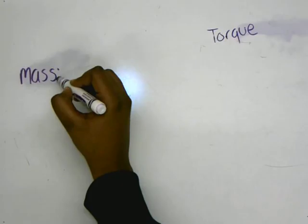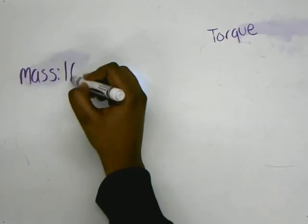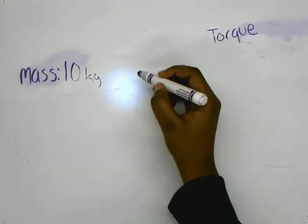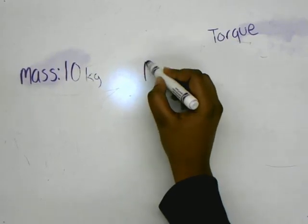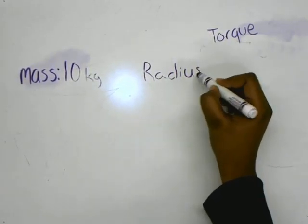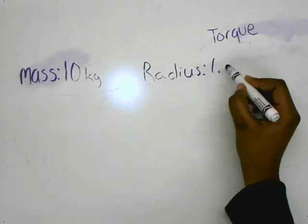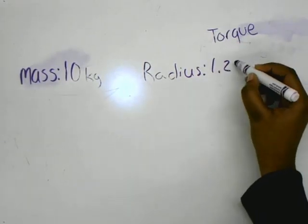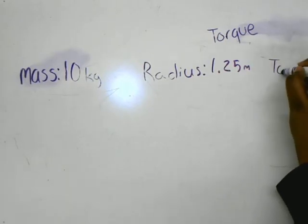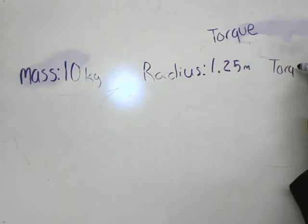So the mass is 10, then the radius is 1.25 meters, and torque is 5.